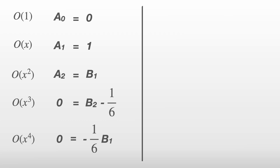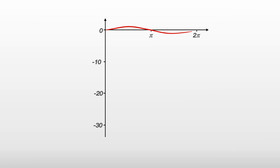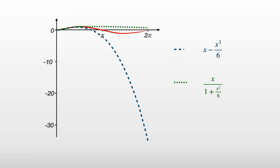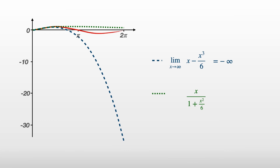Plugging these coefficients back into the 2 over 2 Padé approximant gives x over 1 plus x squared over 6. Comparing sine of x to the Taylor series and the Padé approximant, we can see that the Padé approximant stays closer to sine of x for longer. As x tends to infinity, the Taylor series tends to minus infinity as the minus x cubed term dominates, but the dominant term in the Padé approximant is 1 over x squared, so it actually approaches 0 — a much better outcome when approximating sine of x, which oscillates around 0. Dividing one polynomial by another cancels out that tendency to shoot towards plus or minus infinity.